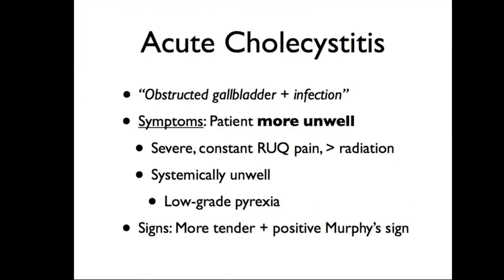Acute cholecystitis is a blockage of the gallbladder with superimposed infection. The patient will be more unwell, with more severe, more constant pain in the same location and radiation — to the tip of the scapula and the epigastrium. They'll be systemically unwell with a low-grade pyrexia, and may have more vomiting and nausea. Signs include increased tenderness and a positive Murphy's sign.